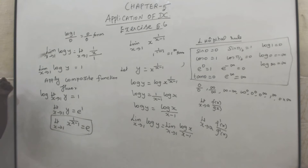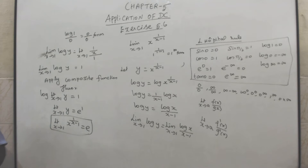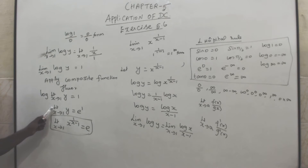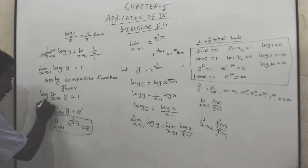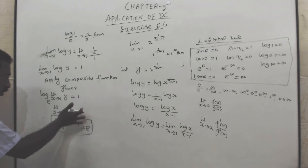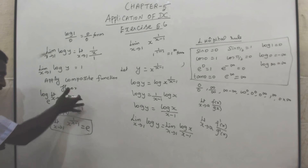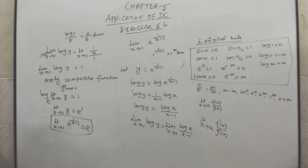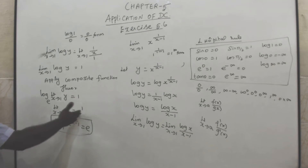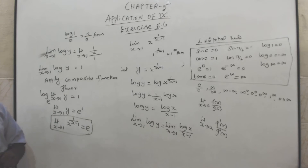To eliminate this log — as we studied in 11th standard, the base is e — limit x tends to 1, so e power 1. If it is 0 then e power 0, if it is minus 1 then e power minus 1. Here e power 1 is e.